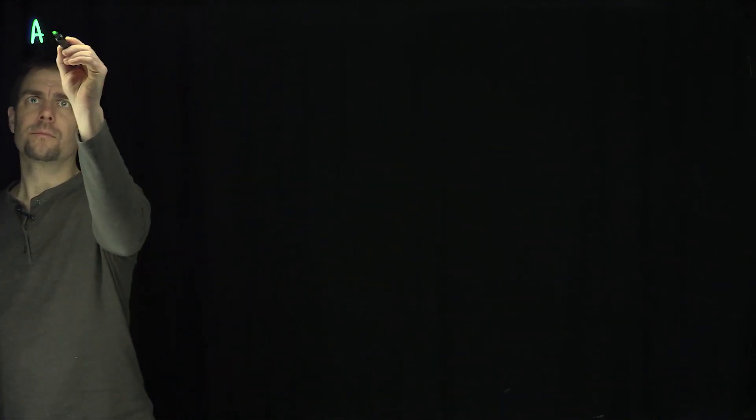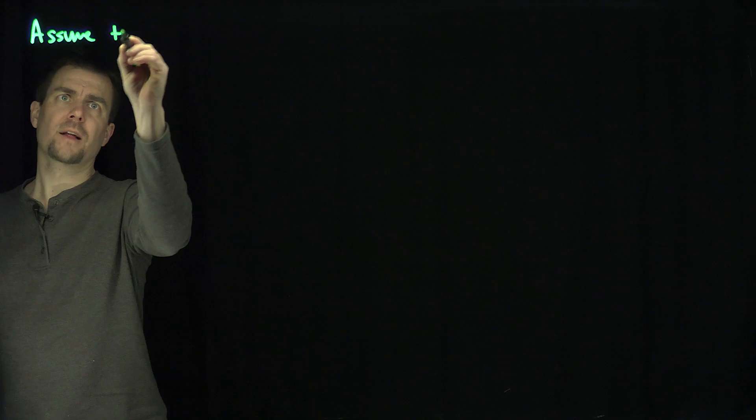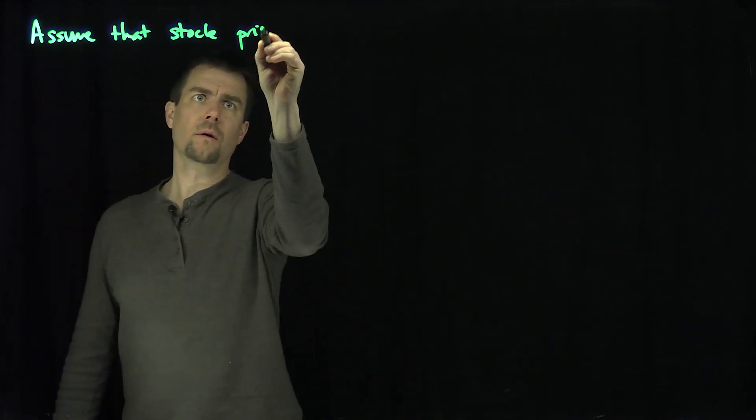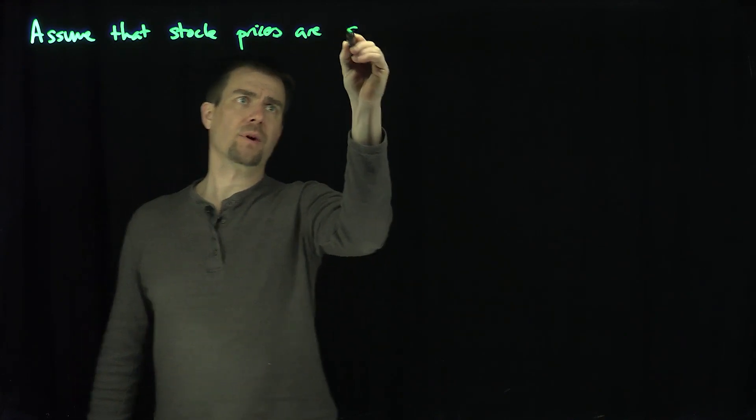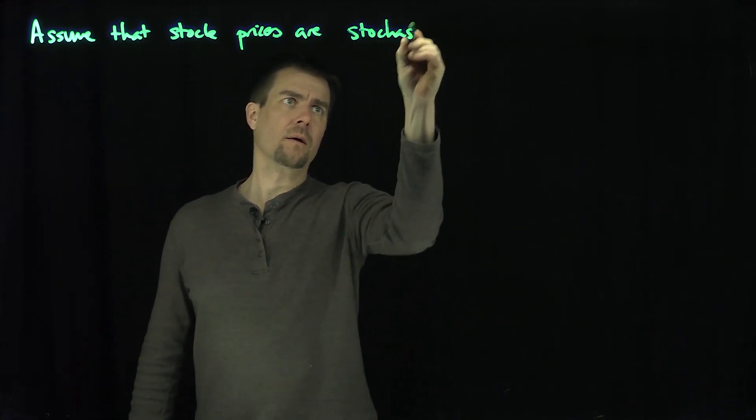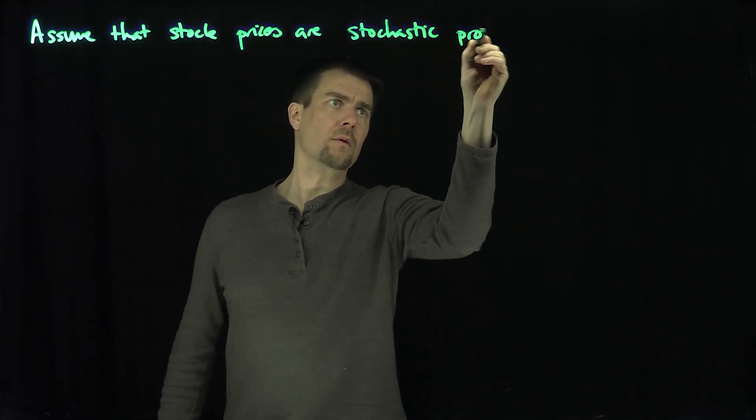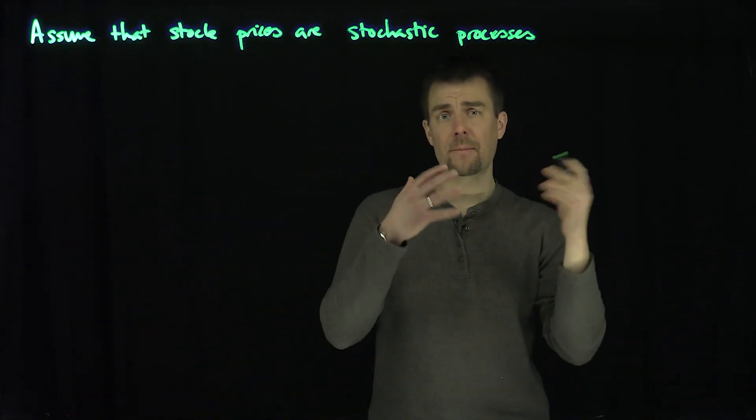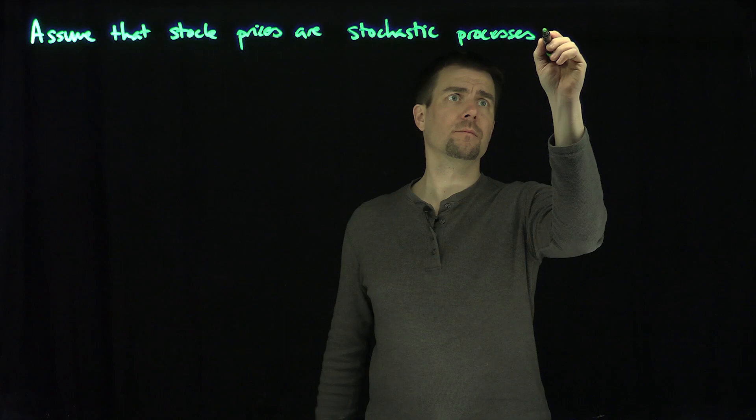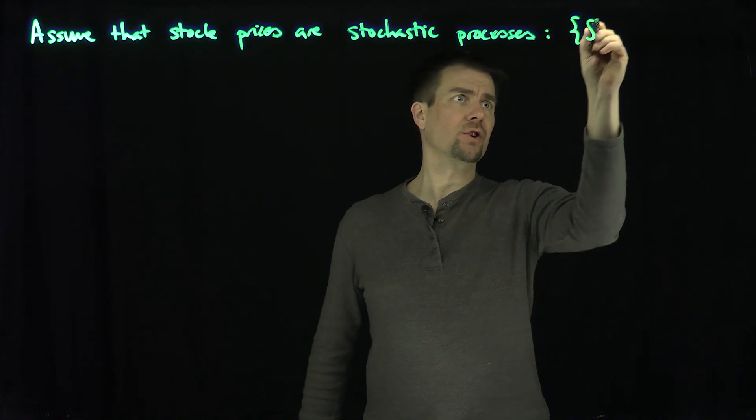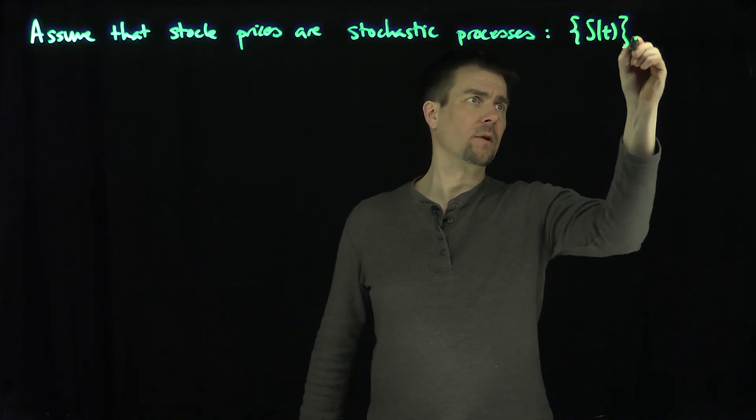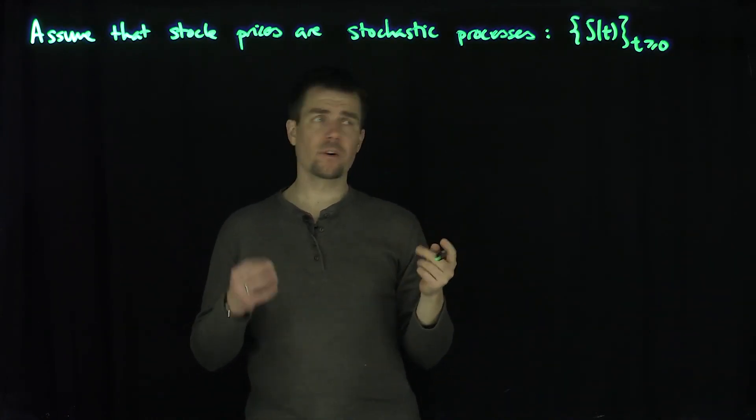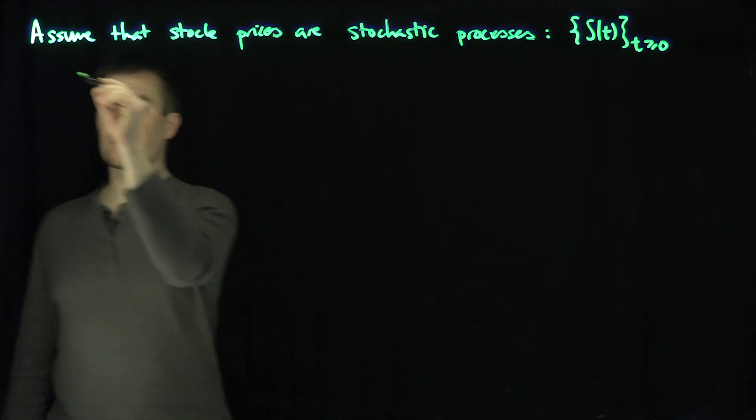We're going to assume that stock prices are stochastic processes, and that just means they change over time and every time they're random. In other words, you have a collection S(t), t greater than or equal to zero, and each one of these, the price at any time, is a random variable.